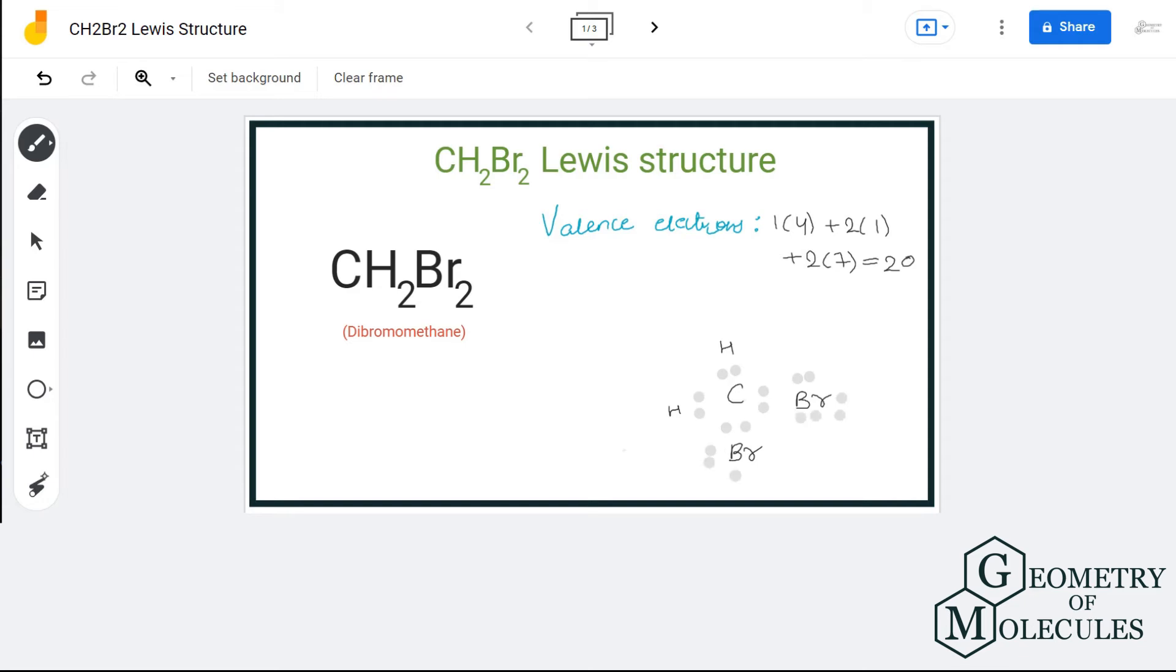As we are left with 12 more electrons, we will place six electrons around this bromine atom and the remaining six around this bromine atom. Doing that, we will be using up all our 20 valence electrons, and this is the Lewis structure for CH2Br2. I hope this video helps you to understand it easily.